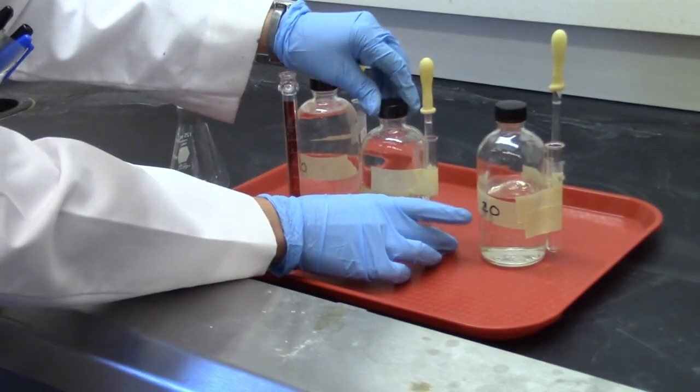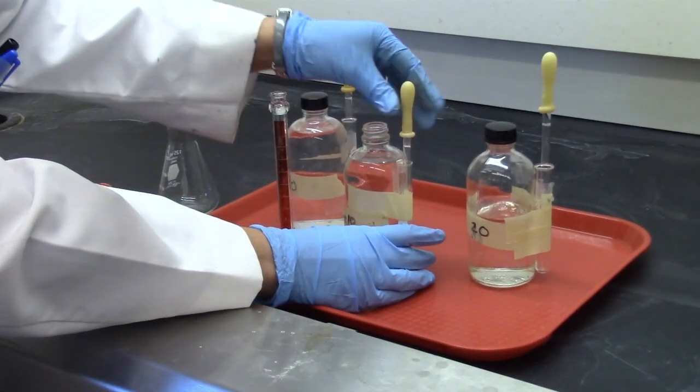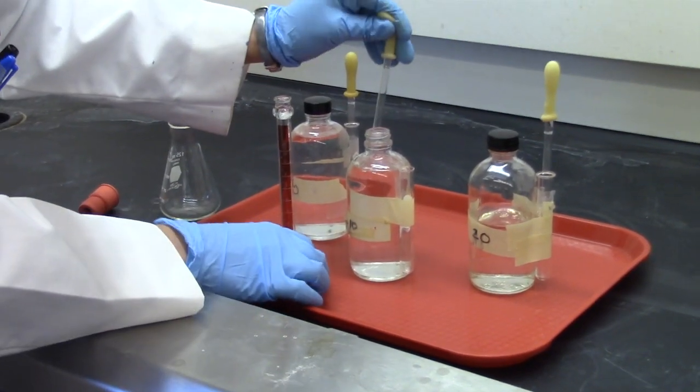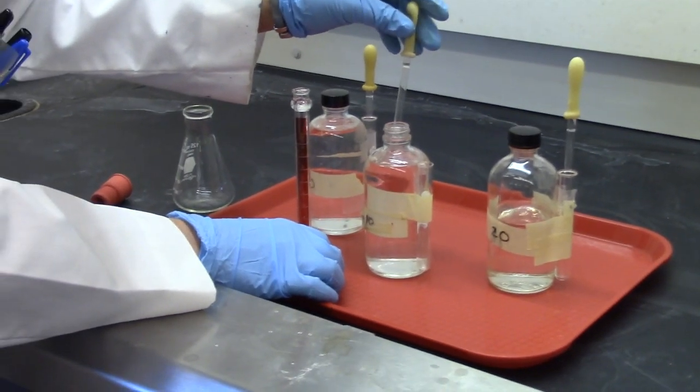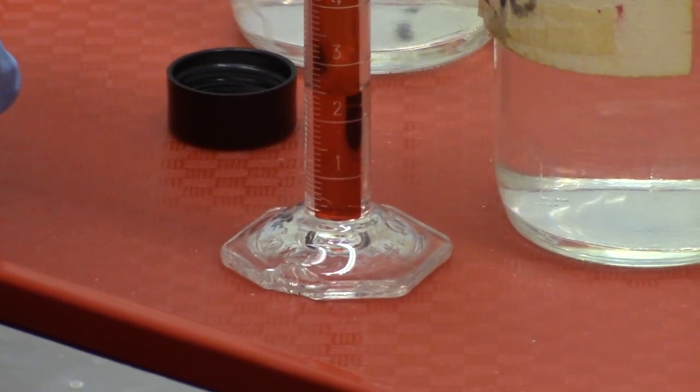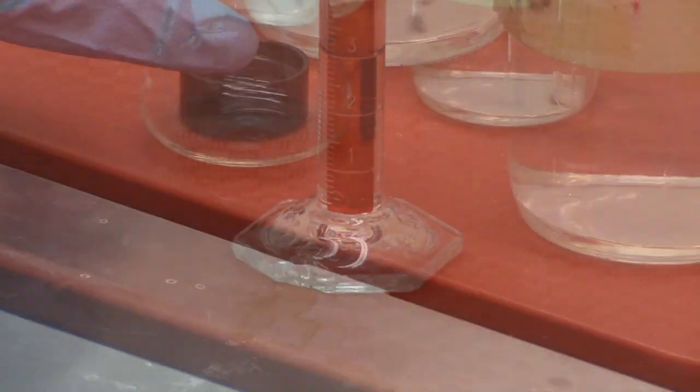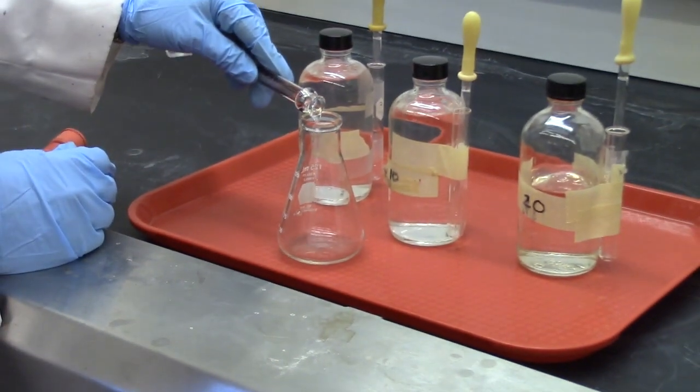Obtain about 3 to 4 milliliters of the unknown which is assigned to you by your instructor. Pour this into the flask and place the septum over the top.